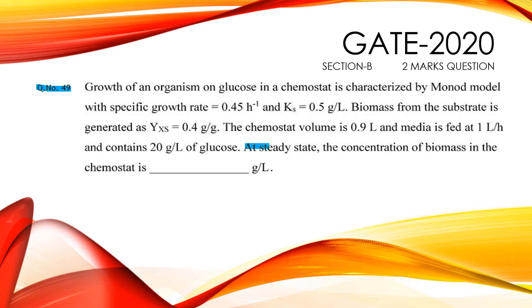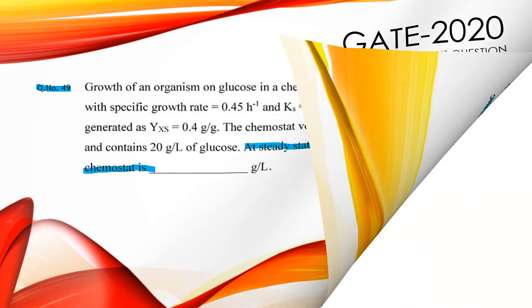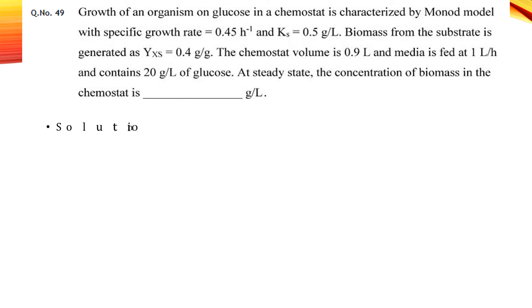At steady state, the concentration of biomass in the chemostat is blank g per liter. Let's solve this question. The formula to calculate biomass for the chemostat is x equals to, within bracket, Si minus D times Ks divided by mu max minus D, times Y_xs.